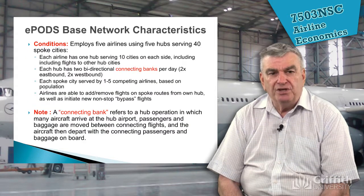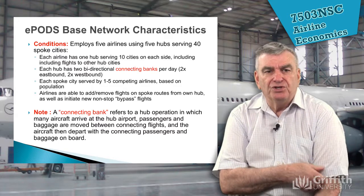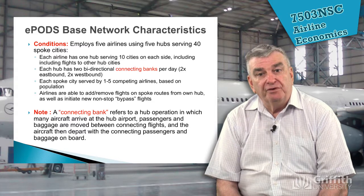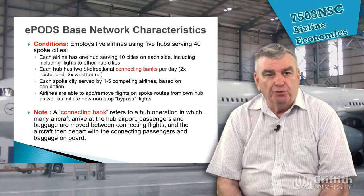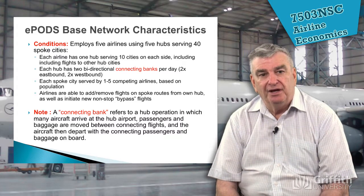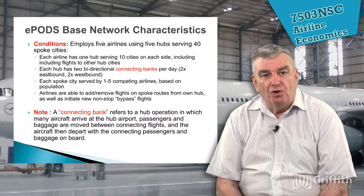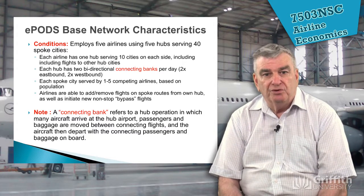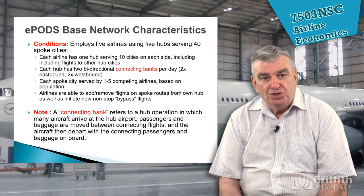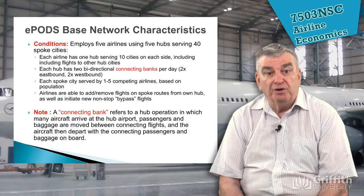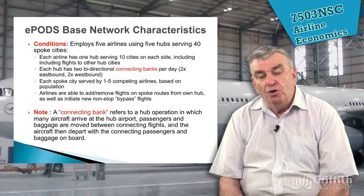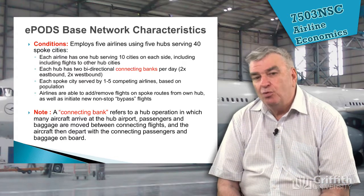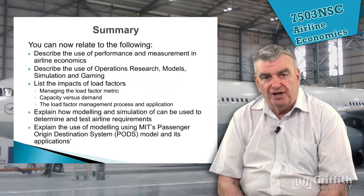When the game is employed, it can be run with five different airlines servicing five hubs and 40 spoke cities — showing the hub-and-spoke network structure. Each airline has one hub servicing 10 cities, each hub has two bidirectional connecting banks, and each spoke city is served by one to five competing airlines depending on population. This gives an understanding of the way airlines operate and the sorts of decisions that have to be made.